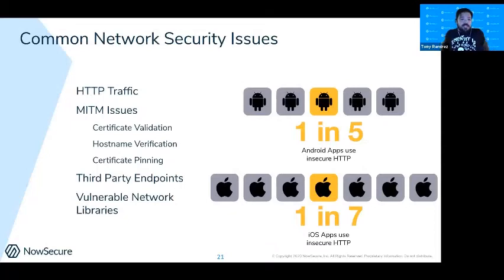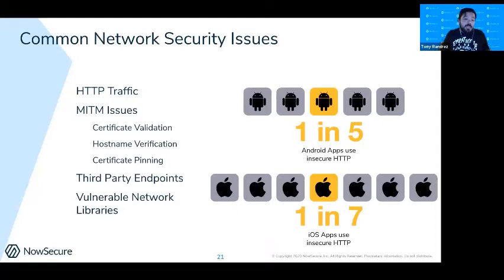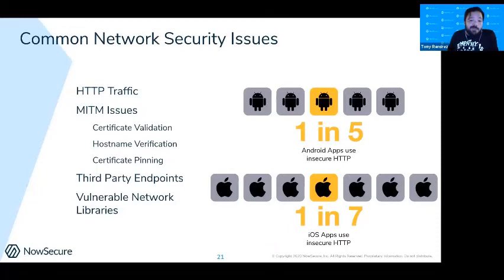Even with all of this, we still see a lot of issues. One in five Android apps is communicating over HTTP, and one in seven iOS apps is communicating over HTTP. That means there are insecure HTTP communications being sent, likely by at least one app on your device.